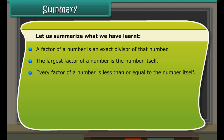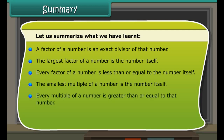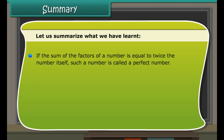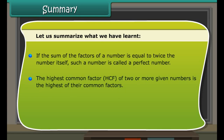Therefore, 36 is the LCM of 12 and 18. The least common multiple (LCM) of two or more given numbers is the least of their common multiples. Do you observe any pattern in the numbers 2, 4, 6, 8, 10, 12, and so on? Each of them is a multiple of 2. The numbers which are multiples of 2 are known as even numbers. The rest of the numbers — 1, 3, 5, 7, 9, 11, and so on — are called odd numbers.